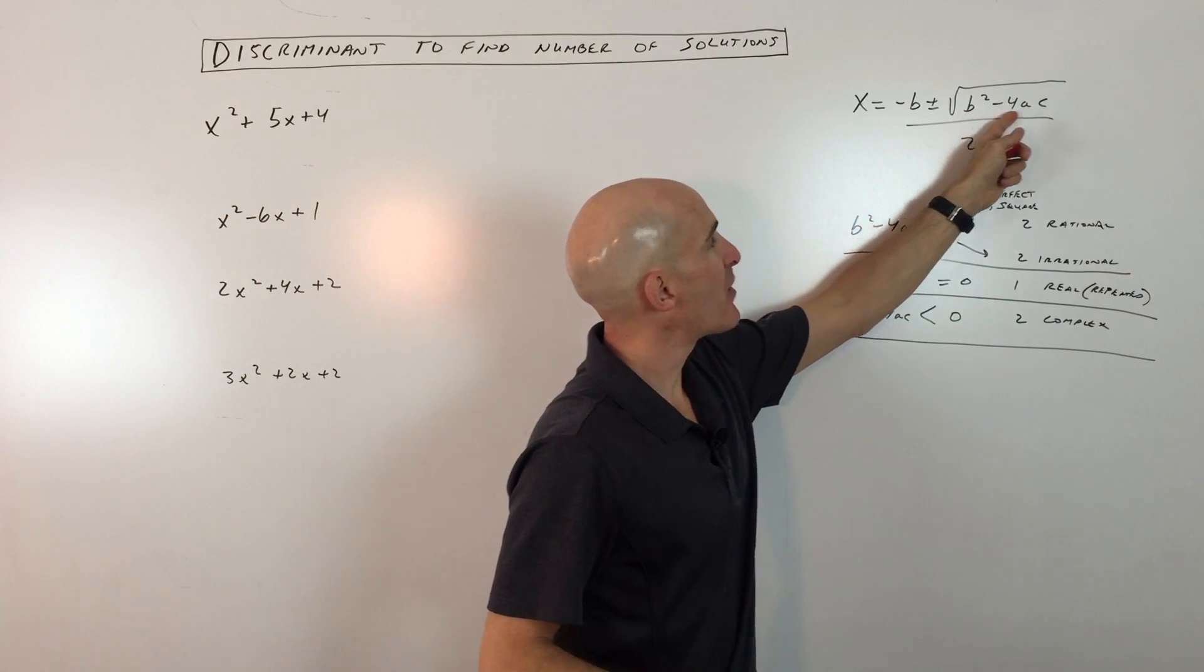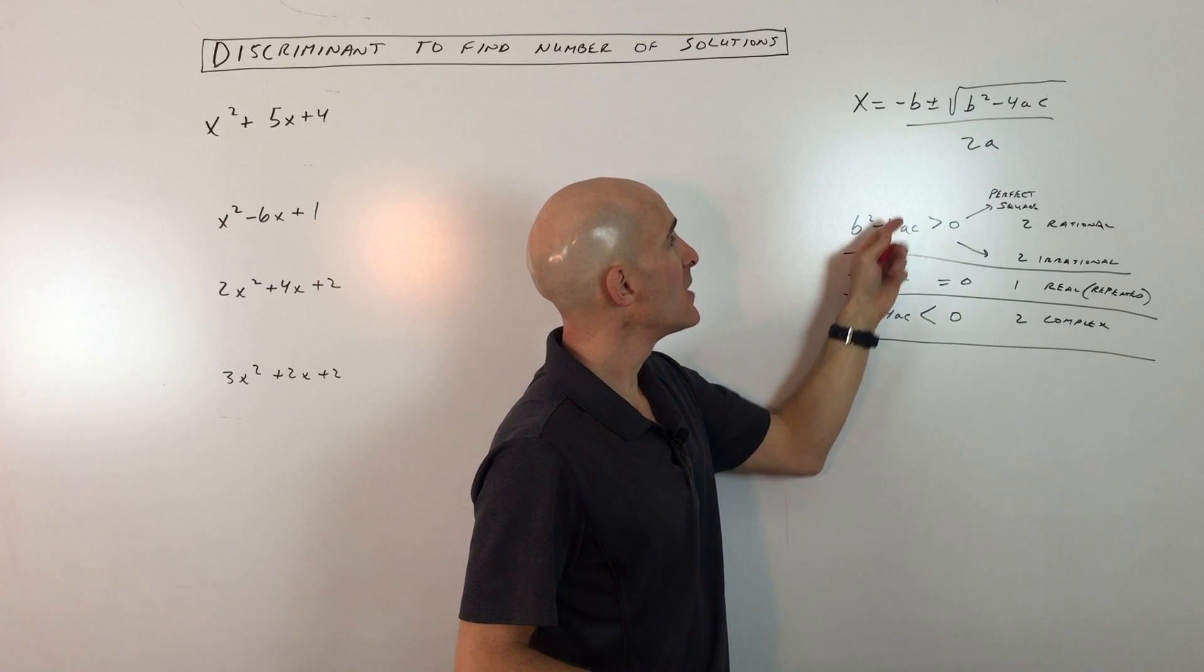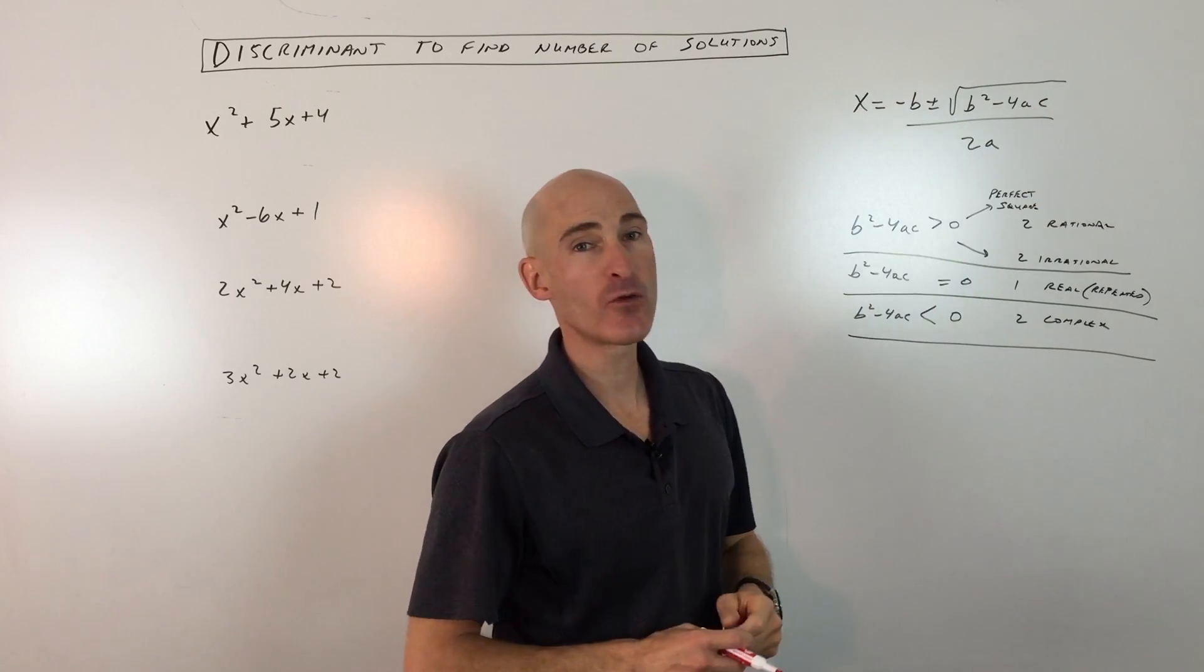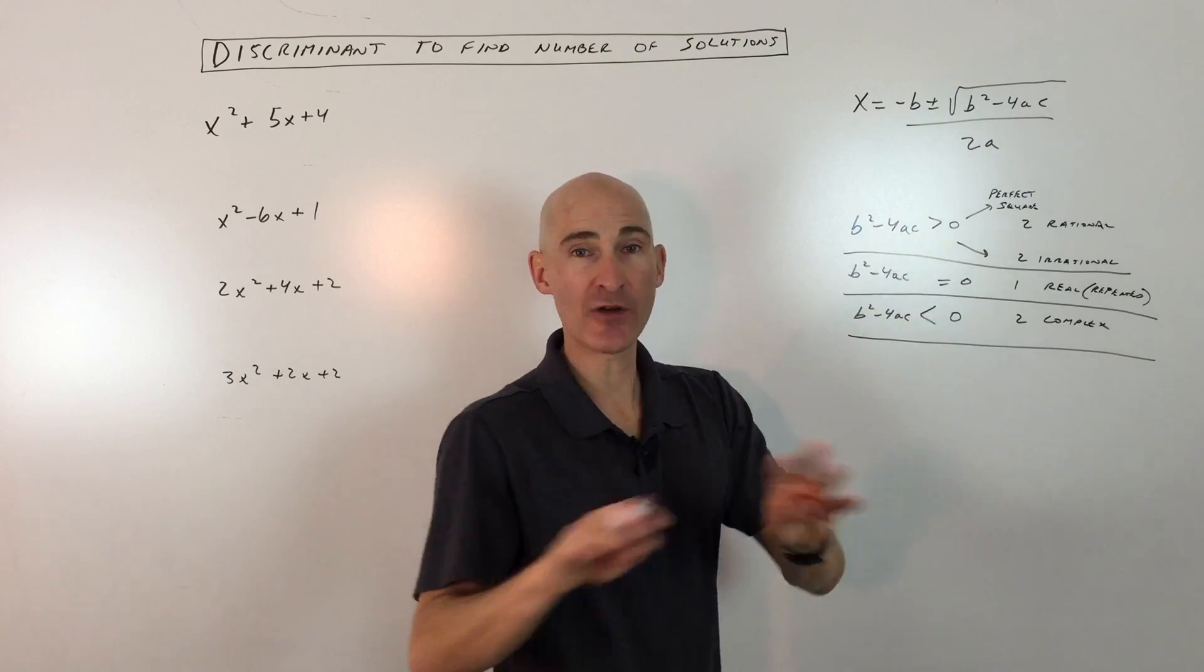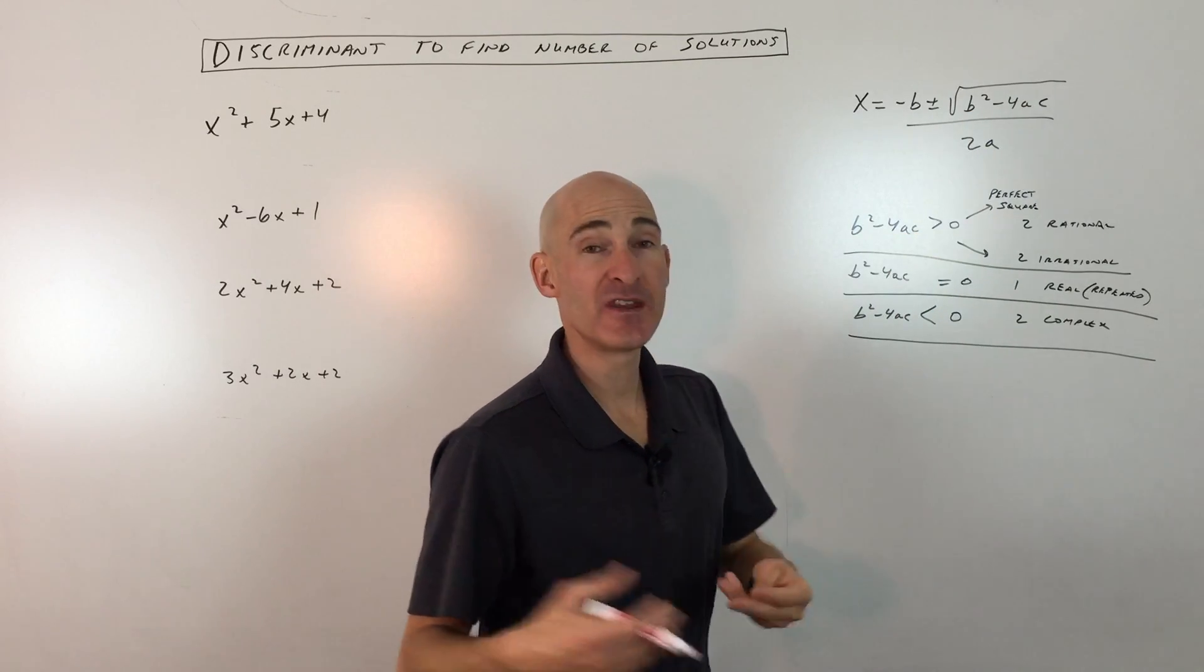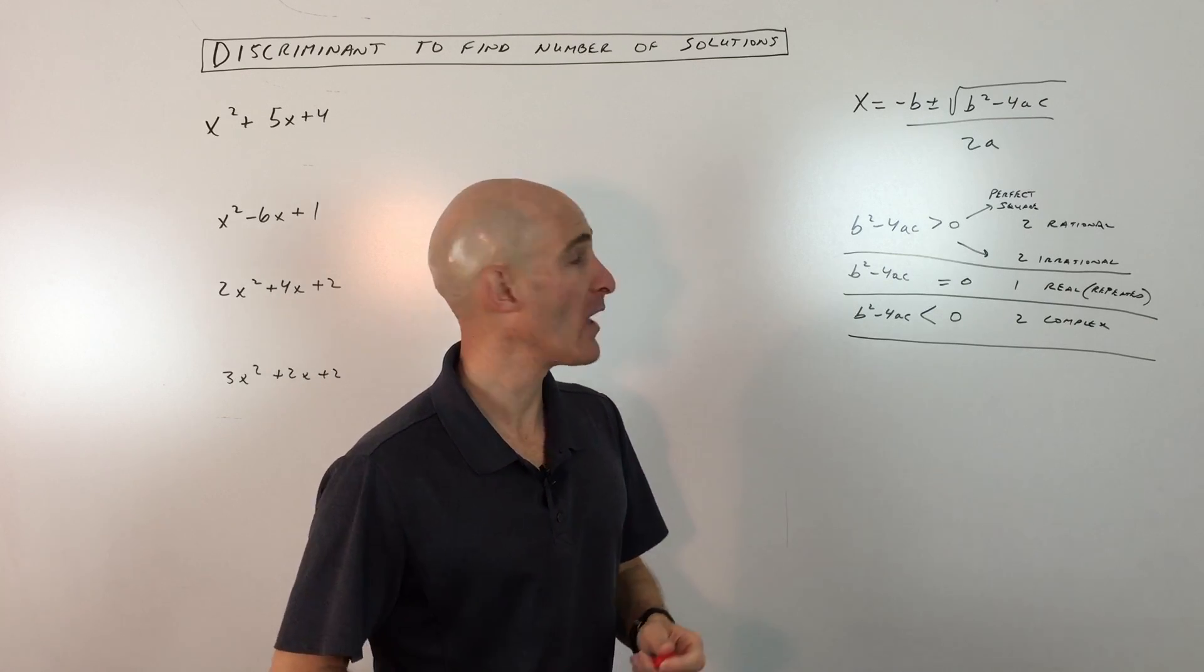The discriminant is this part right here in the quadratic formula, the b squared minus 4ac. So without doing the entire quadratic formula, you can zero in just on this quantity here, b squared minus 4ac, without the square root, and you can find out the nature of the roots or the number of solutions that the quadratic formula will have.